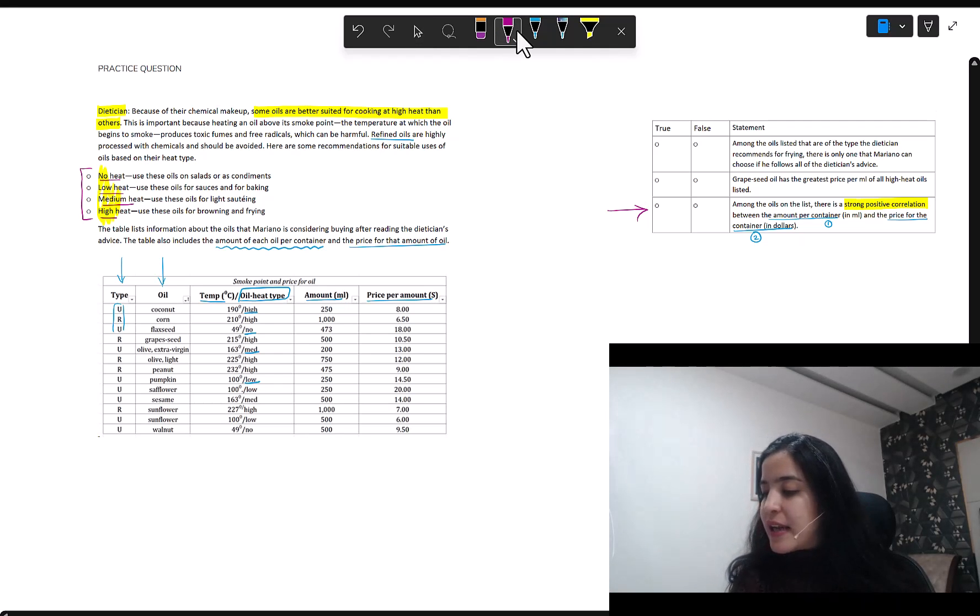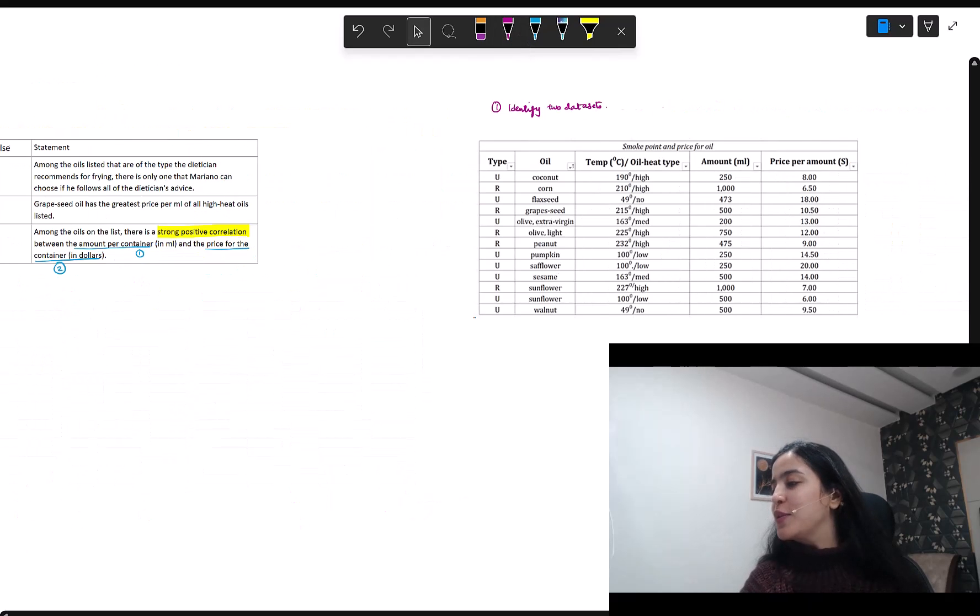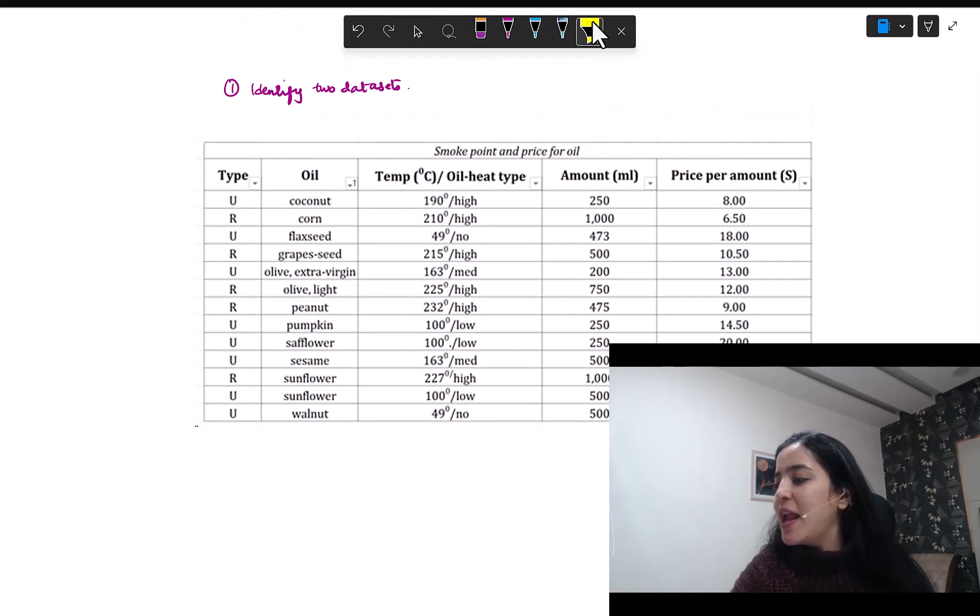And you will clearly be able to identify them. Amount per container in ml, this is the column here, the amount column. And the other one, price per amount, that was price per container. See how the words are not exactly the same. You have to make those minor translations to be able to see that this part in the statement is the same as this table header, this column header. So, this is your second column. Now, we'll only focus on these two columns. My two columns of interest are the last two. This completes the first step in my process, identifying the data set.